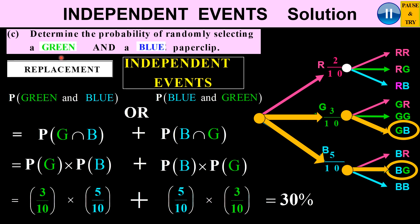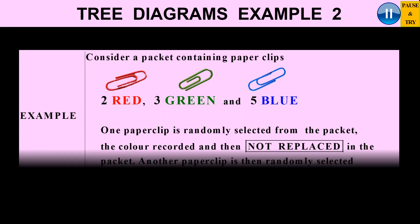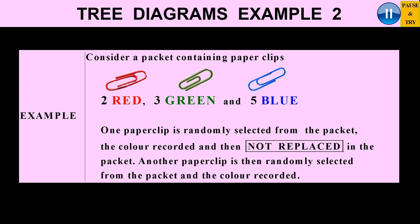So with independent events, when we say green and blue without specifying order, we consider both green-then-blue and blue-then-green. Now let's take the same problem but modify it slightly. We still have two red, three green, and five blue paper clips, but now we say not replaced — instead of the previous scenario where we replaced. Let's see what the tree diagram looks like with no replacement.